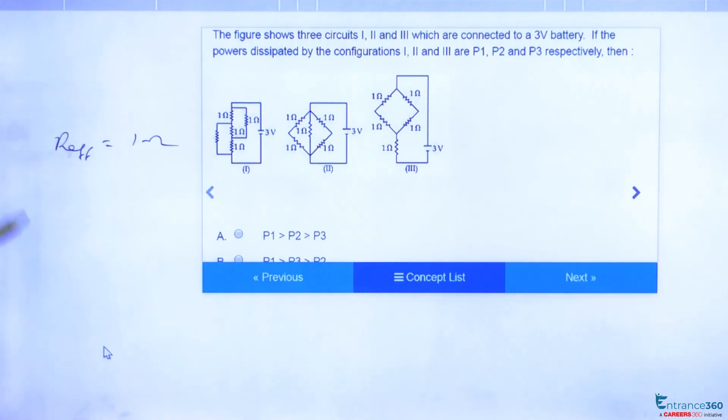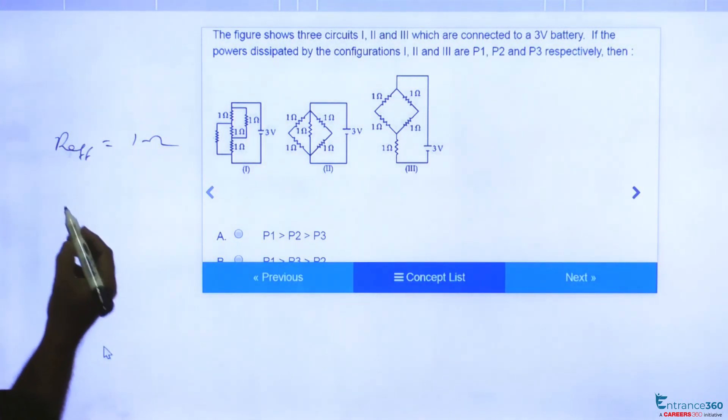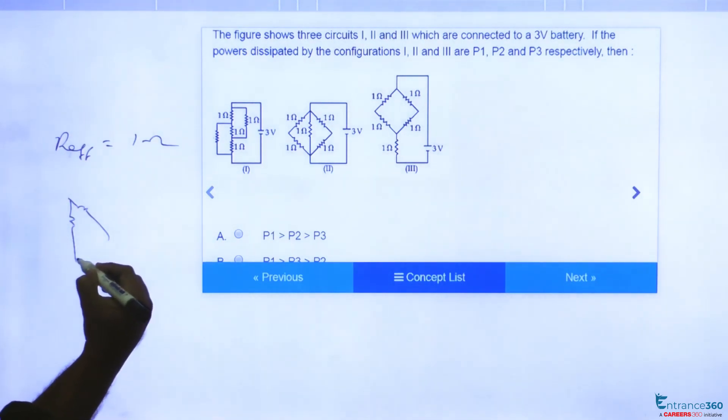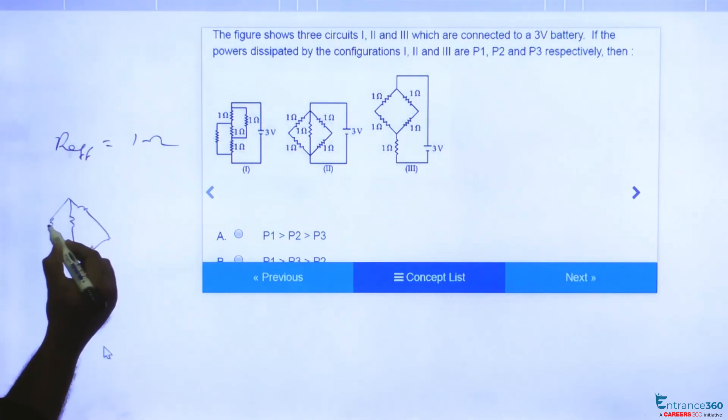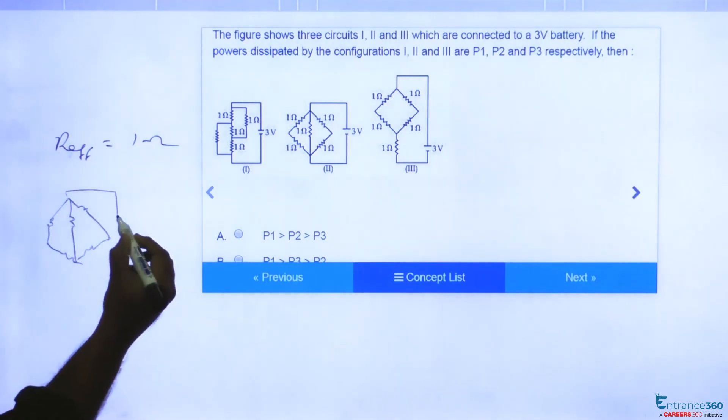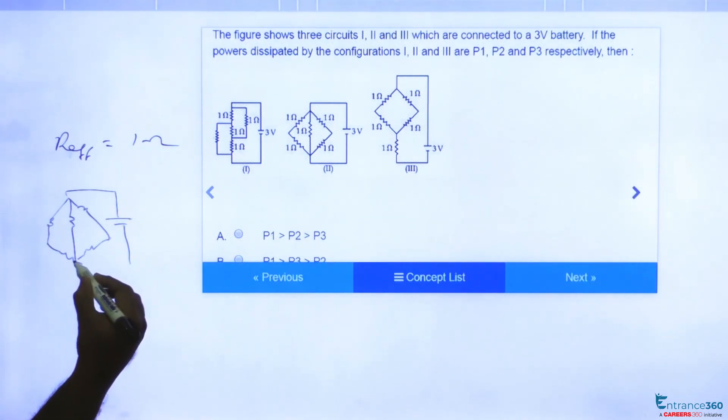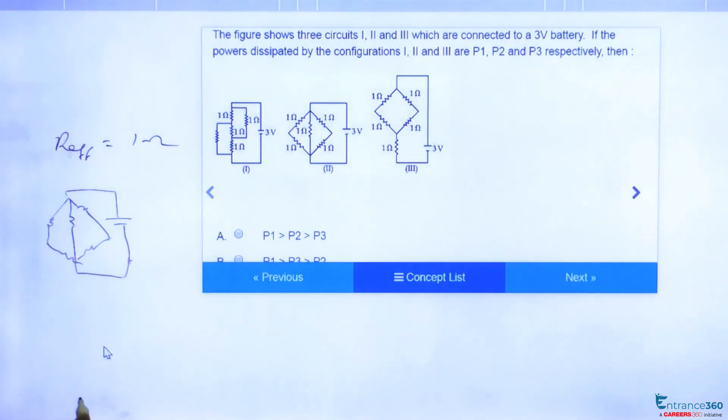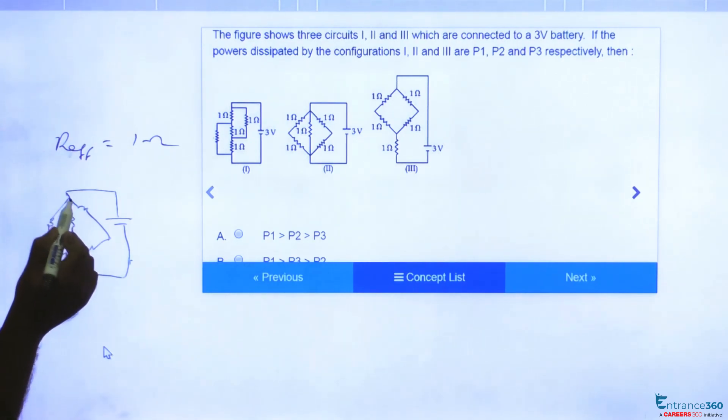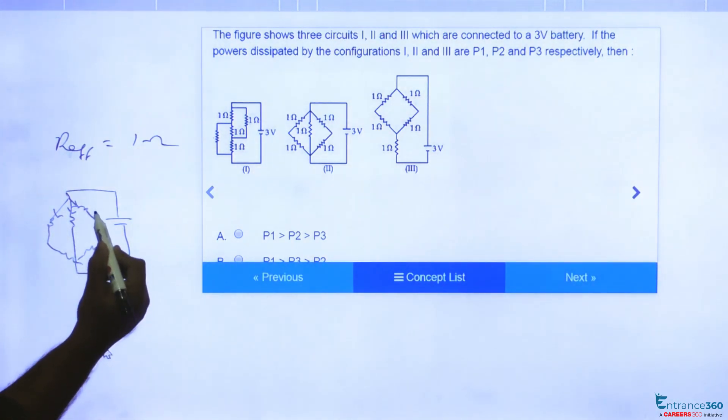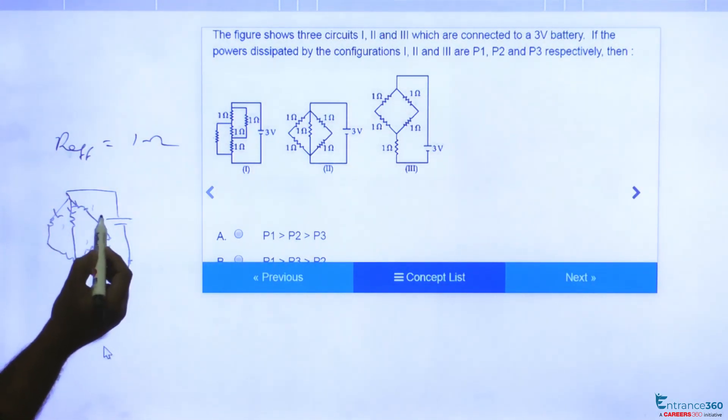Let's go for the next circuit. The next circuit we have 4 resistances connected across 3 volts. Here current will divide like this branch, in this branch, and in this branch. Current will flow like this.